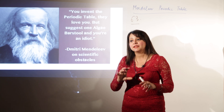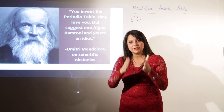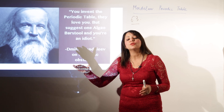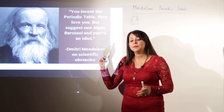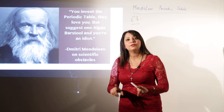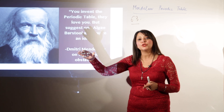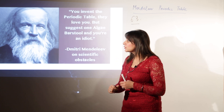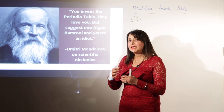The periodic table contains vertical columns called groups and horizontal rows called periods. Mendeleev was able to classify 63 elements in this proper tabular form called the periodic table, which comprises horizontal rows (periods) and vertical columns (groups).